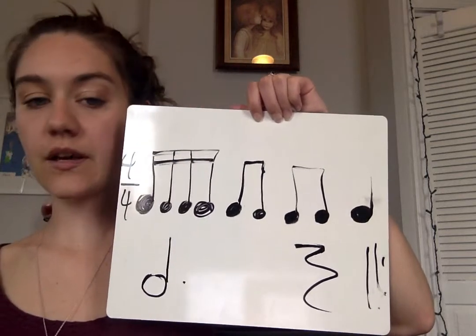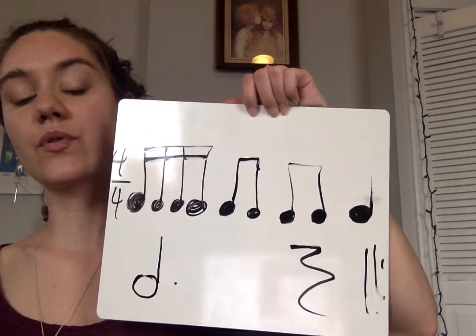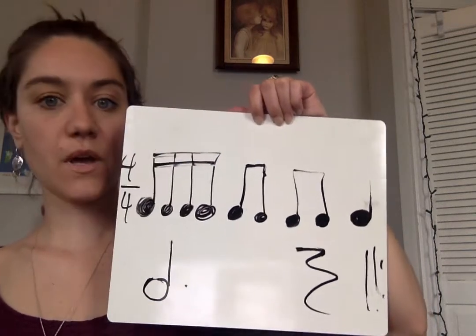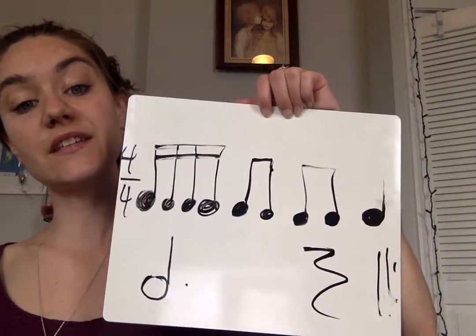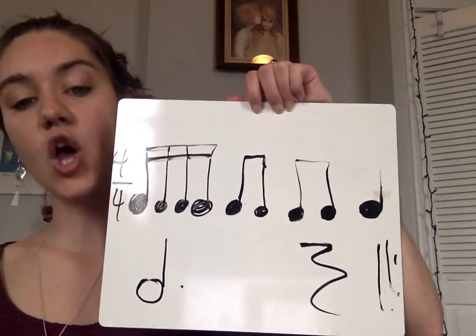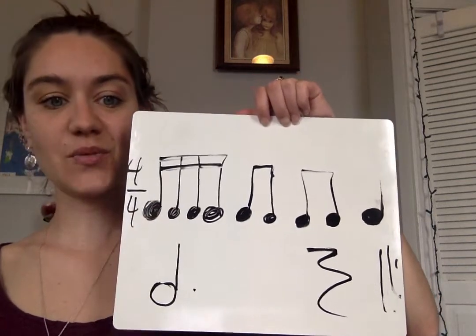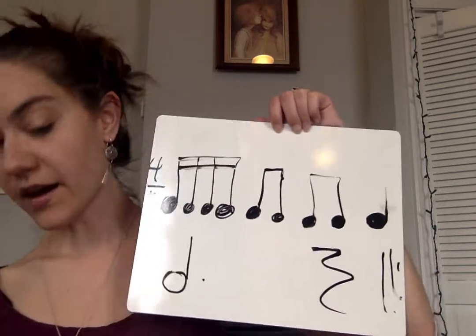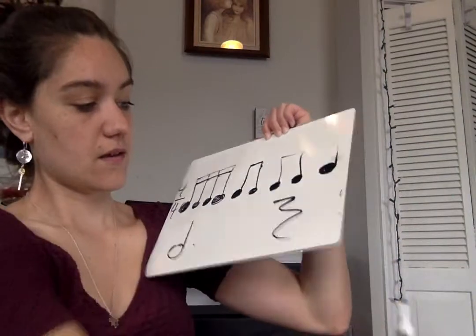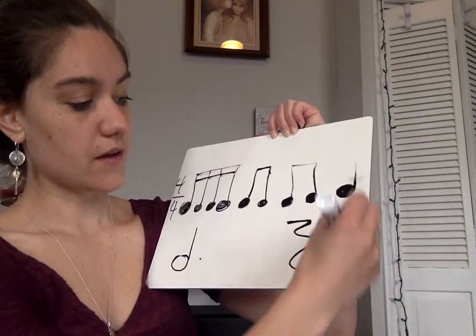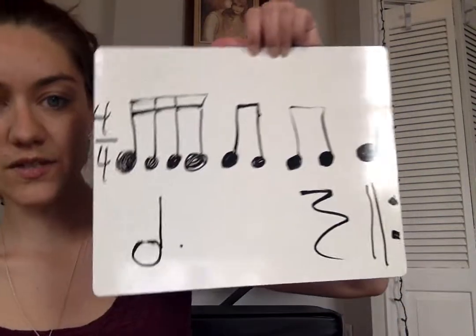And again — tika tika, ti-ti, ti-ti, ta, tu. Try it again with your item: tika tika, ti-ti, ti-ti, ta, tu. That's your rhythm. Over here is a repeat sign — it's two lines and then two dots. That means to repeat, so let's do it twice.